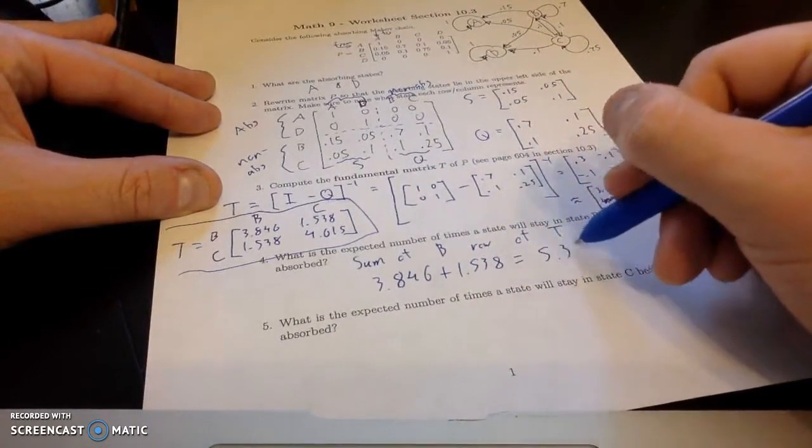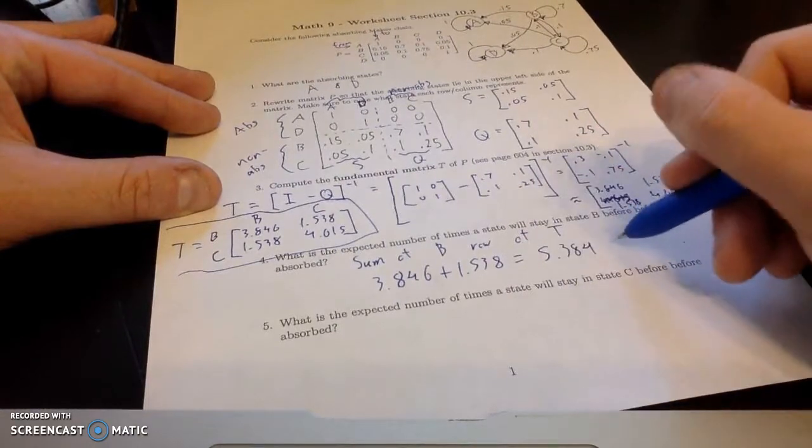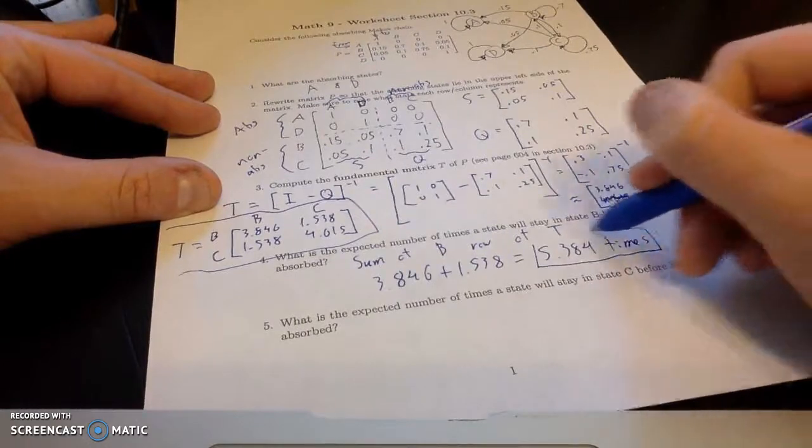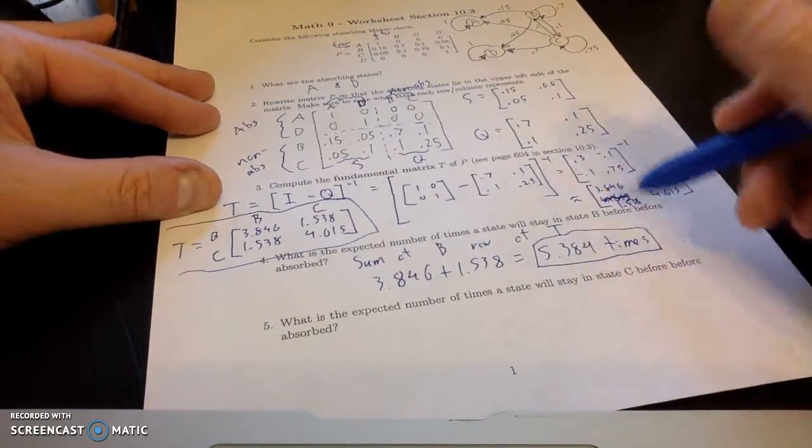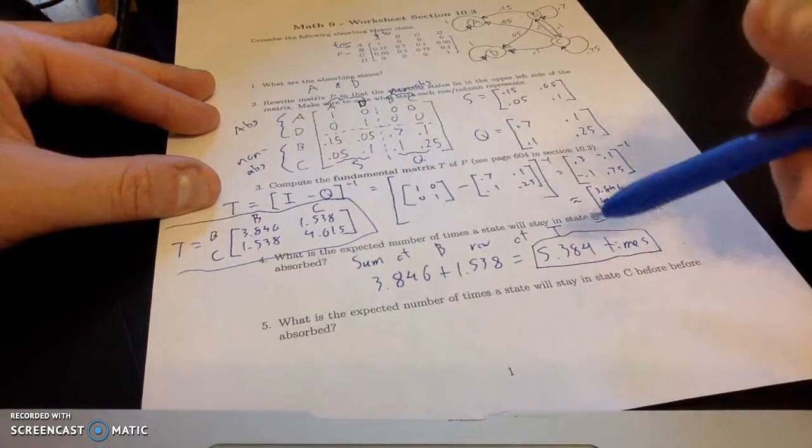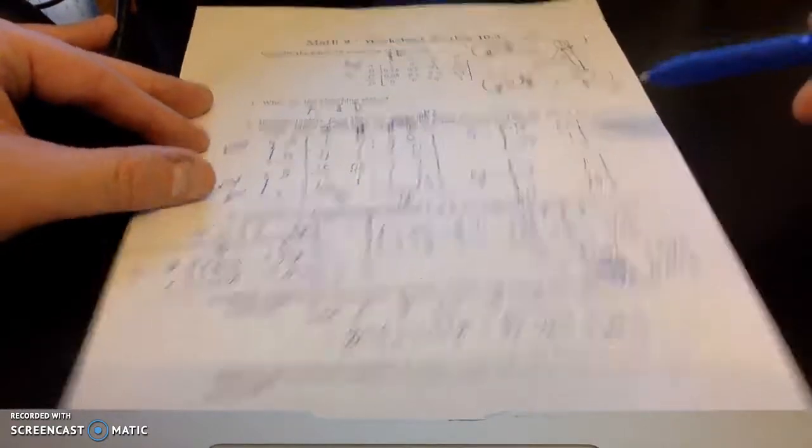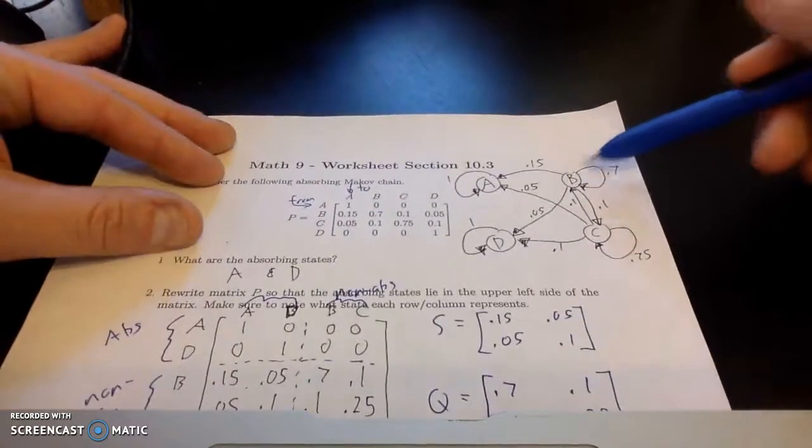add those two together, and about 5.384 times. All right, that's what we'd expect if we start in state B. It will probably stay in this state before being absorbed about five times.